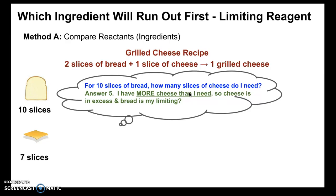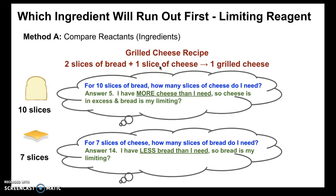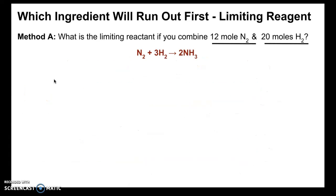Just to show that it works either way — if you start with the cheese instead, you ask: for 7 slices of cheese, how many slices of bread do I need? According to the recipe, one slice of cheese requires double the amount — 2 slices of bread — so you'd need 14 slices of bread. You compare that to what you have, which is 10. You have less bread than you need, so bread is the limiting reactant. Either approach gives you the same answer.